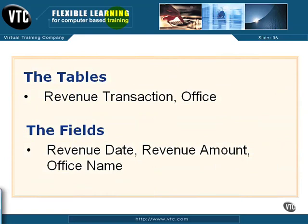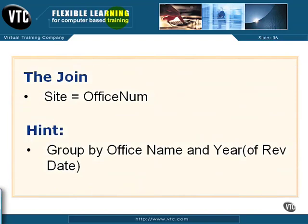Here are the tables you're going to be using: revenue transaction and office. The fields are revenue date (also known as rev date), revenue amount, and office name. The join: site will be equal to office num. The site is from the revenue transaction table, and the office num is from the office table.